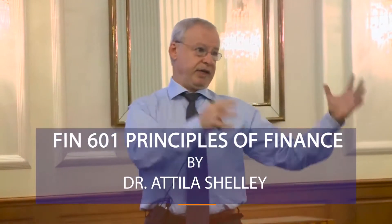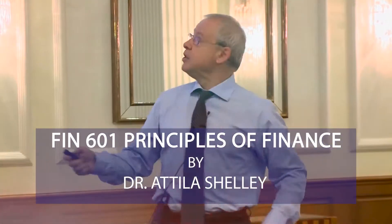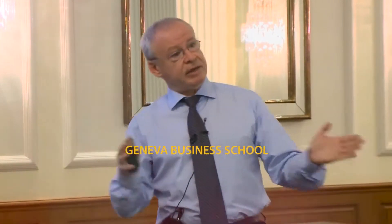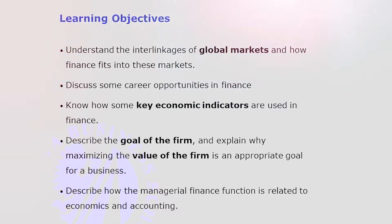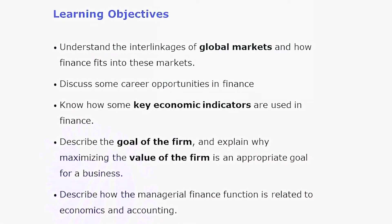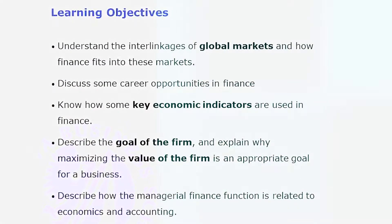We need to understand the interlinkages in global markets, which we will start with physical markets — people buy and sell things, services — and then interlink it to financial markets, and how companies produce those and what they need to do to produce them.